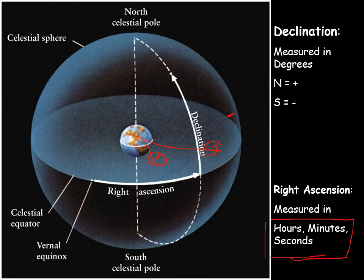Why would you measure east and west in hours? Because Earth rotates — as Earth turns, that star is going to be overhead two hours before that other star. Earth rotates 360 degrees in 24 hours, so that's 15 degrees per hour. That means every four minutes, the Earth goes one degree.